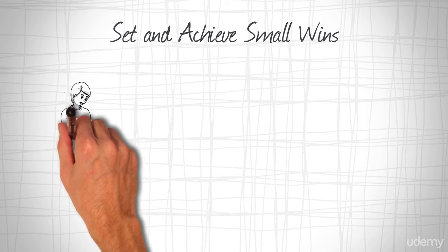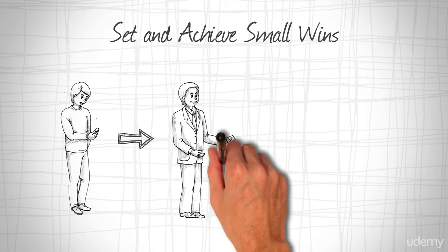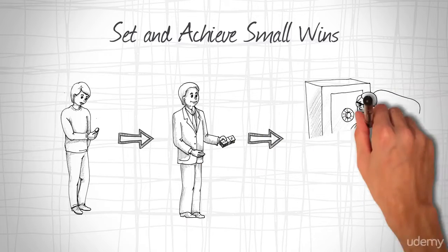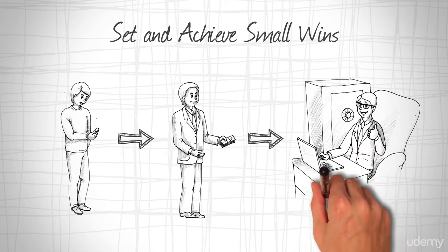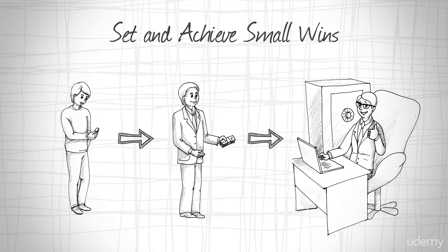Save enough money to cover your living expenses for three months by setting a goal to reach $100 in savings, then $250, then $500.